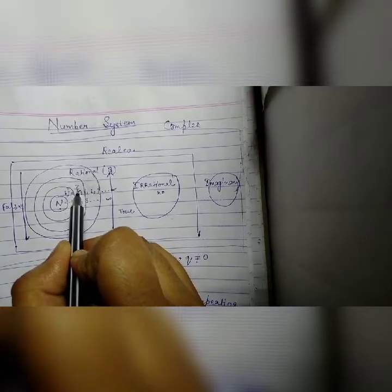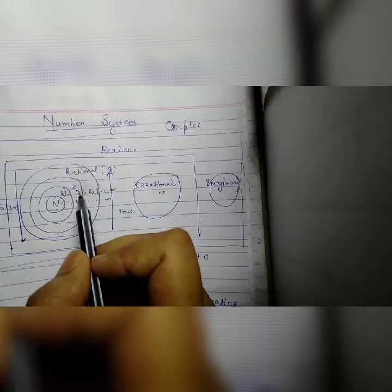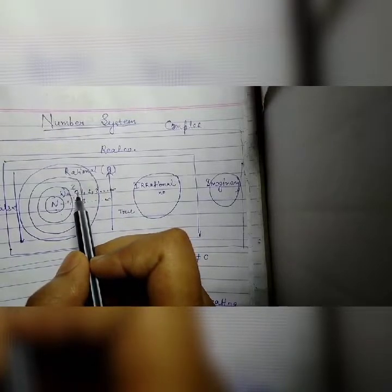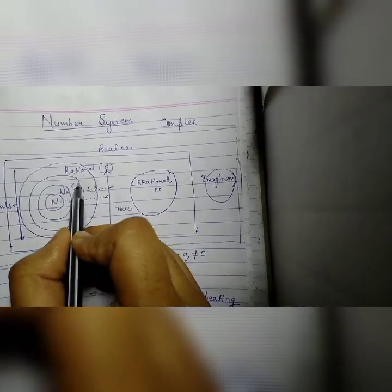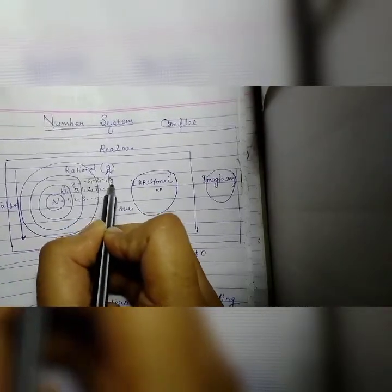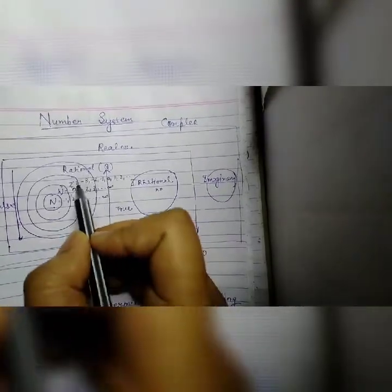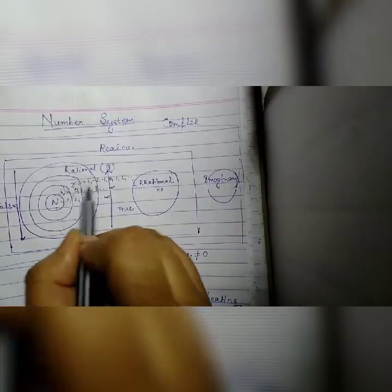After that, we have integers. Now, integers are which numbers? Integers are whole numbers but they are negative. So, as we know, we have minus 3, minus 2, minus 1, 0, 1, 2, dot dot. These are all our integer numbers.